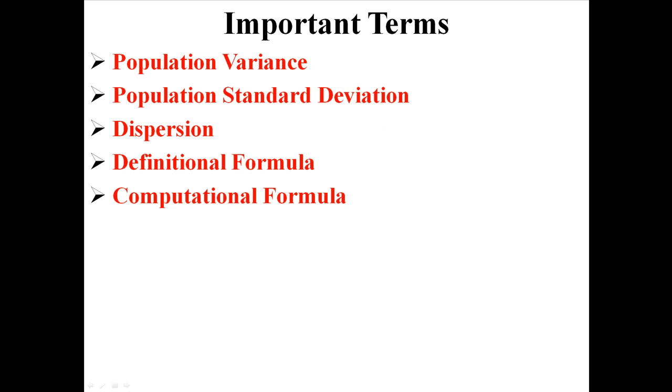Hopefully that wasn't too complicated. So from this video, understand how to calculate the population variance and standard deviation. Also understand that this is a measure of dispersion. Like before mean, median, and mode are measures of central tendency. Now I'm talking about measures of dispersion. And also notice that there are two different formulas for calculating standard deviation. There's the definitional approach and the computational approach. The definitional approach is a little bit longer, but it makes more sense. Whereas the computational formula is easier and it makes a little bit less sense.